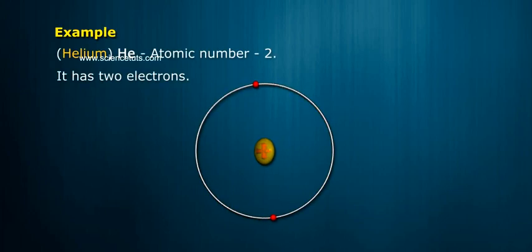Example: Helium, He, atomic number 2. It has two electrons.